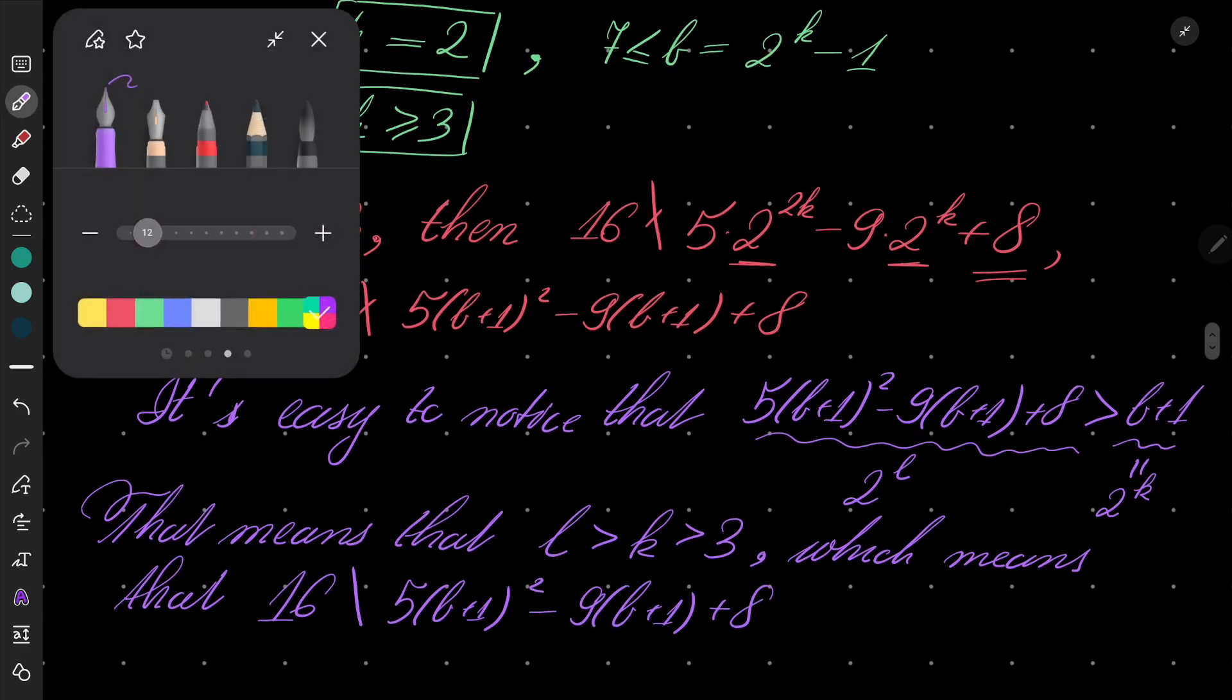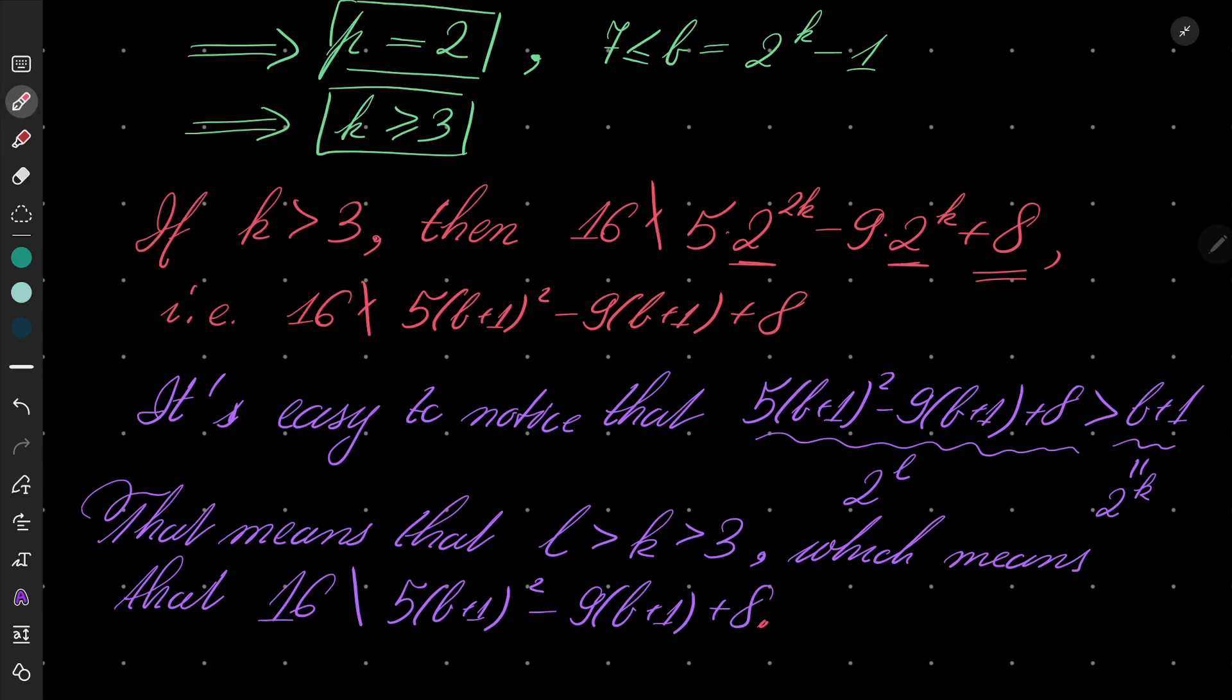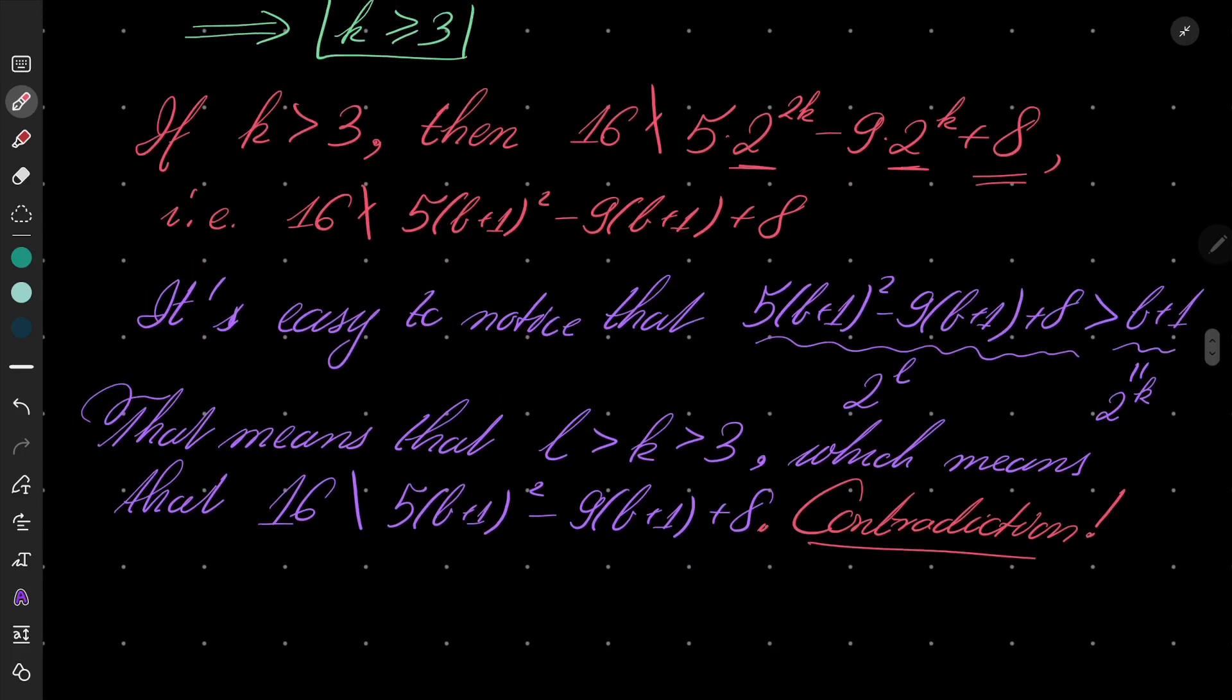We get a contradiction because we have established that 16 doesn't divide this expression. That means K cannot be greater than 3. Contradiction.